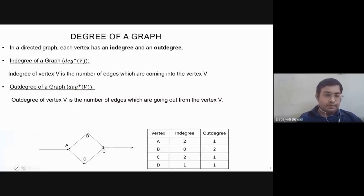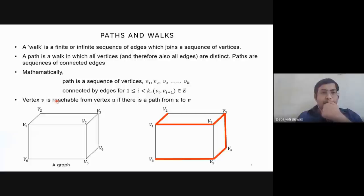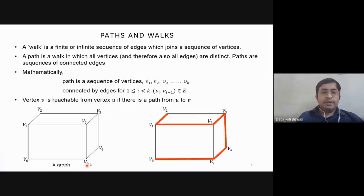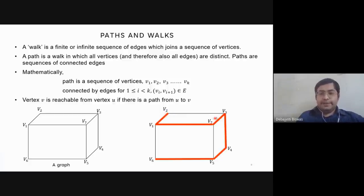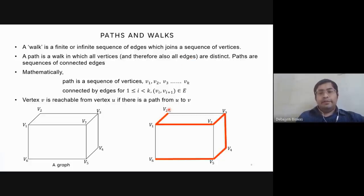A walk is a finite or infinite sequence of edges which joins a sequence of vertices. A path is a walk in which all vertices and therefore all edges are distinct. As you can see in this diagram, none of the edges are the same — V1-V2 is distinct, V1-V7 is distinct, V7-V3 is distinct, and so on.